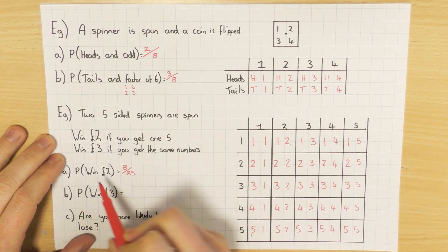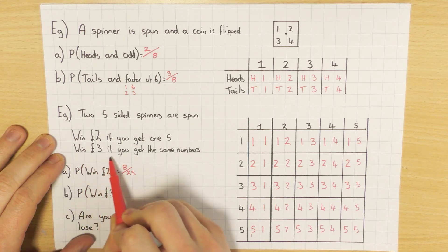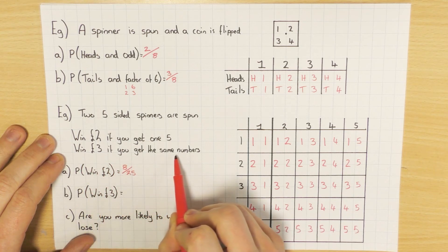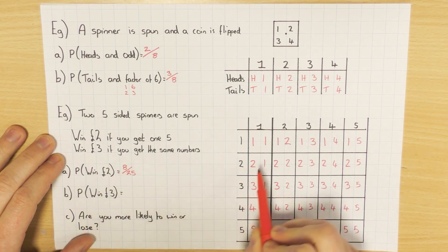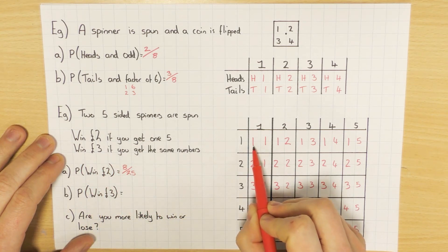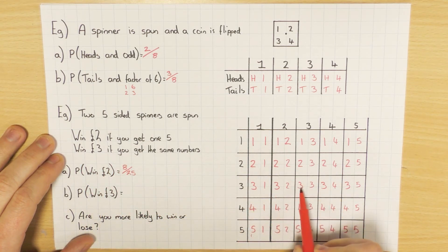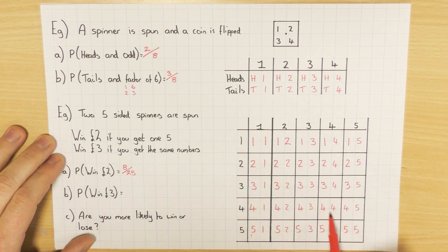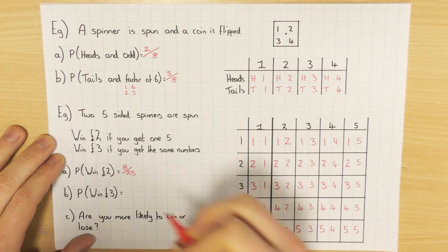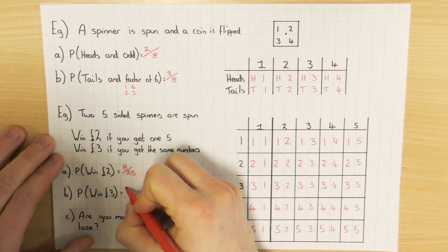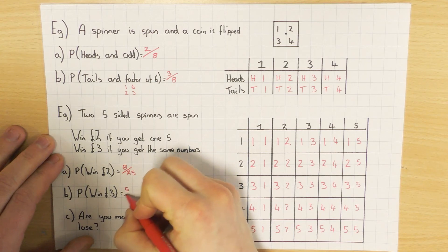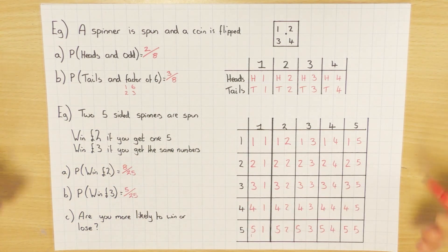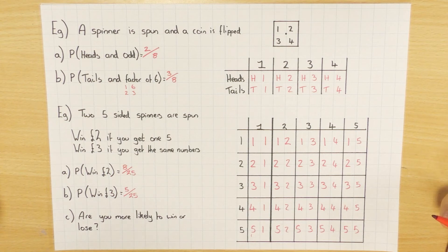What's the probability of winning three pounds? You win £3 if you get the same numbers: (1,1), (2,2), (3,3), (4,4), (5,5) - so there are 5 possible outcomes out of 25. Again, the sample space makes it straightforward to work out these probabilities.